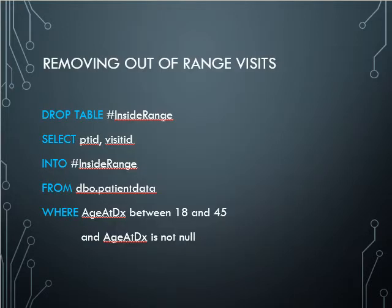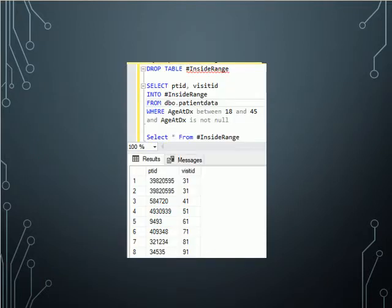Here we're looking at removing out-of-range visits. Depending on your data analysis, you might be looking for a specific age range, sex, or diagnosis. This code selects patient ID and visit ID into a temporary file called 'inside_range' from 'patient_data', using a WHERE clause where age at diagnosis is BETWEEN 18 and 45 and age at diagnosis is not null. Running this in SQL server returns patients who fit within that age range.